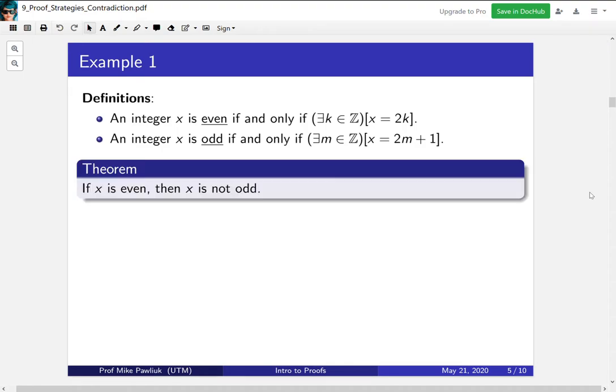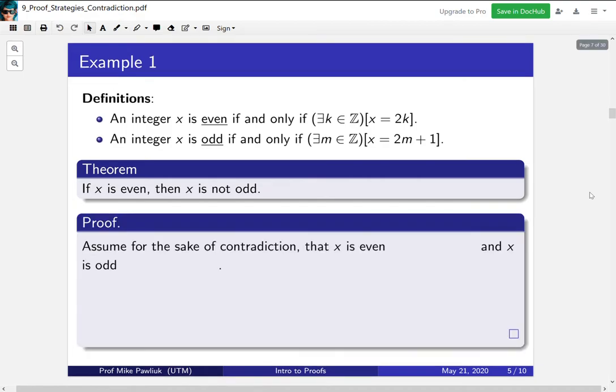So let's see that proof right now. The theorem is: if x is even, then x is not odd. And we'll prove this by contradiction. Assume for the sake of contradiction that x is even and x is odd.